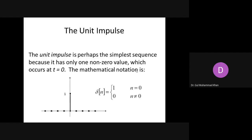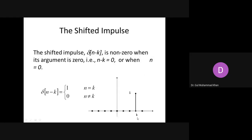So we're going to start discussing this. You do remember the unit impulse delta of n, having a value of 1 at n equal to 0 and a value of 0 when n is not equal to 0. If you shift that to point k, it looks like delta of n minus k, which means it has a value of 1 at n equal to k and 0 at any value other than k. So k is a generalized term — delta of n minus k has a value only at n equal to k.